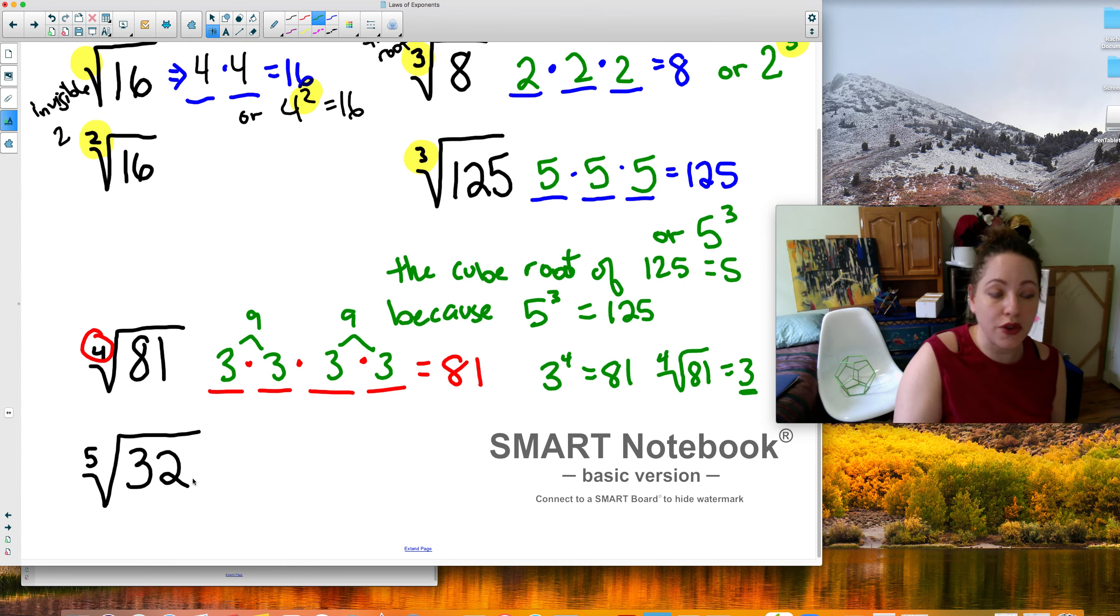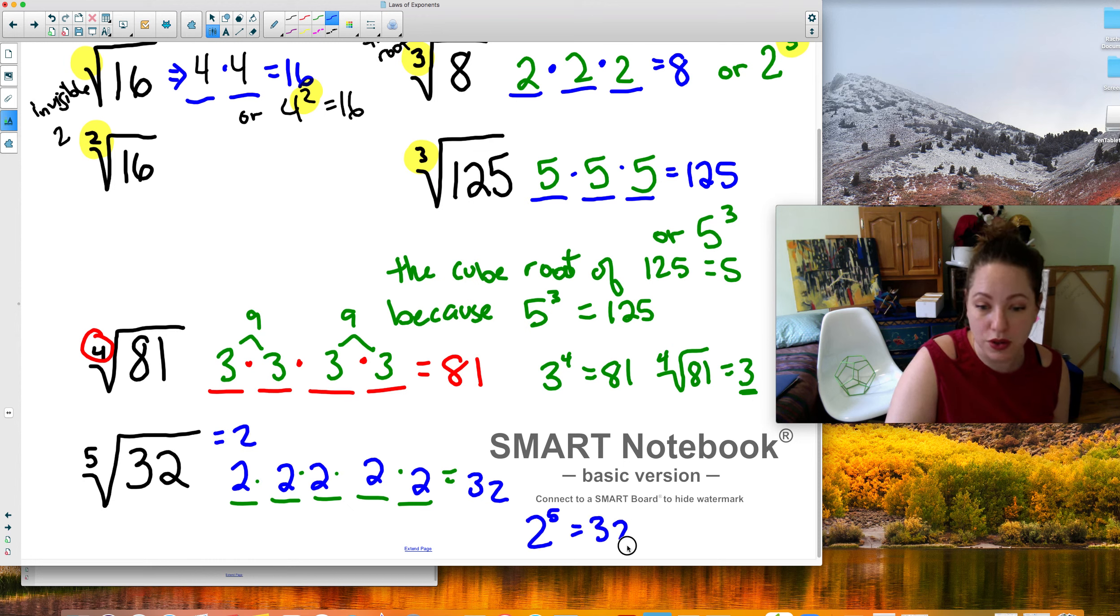Fifth root of 32. What does that mean? Well, what number 5 times? 3, 4, 5. Well, it's got to be a small number, right? So you try a couple things and you'll see 2. 2 times 2 is 4 times 2 is 8 times 2 is 16 times 2 is 32. And so the fifth root of 32 is equal to 2 because 2 to the fifth power equals 32.